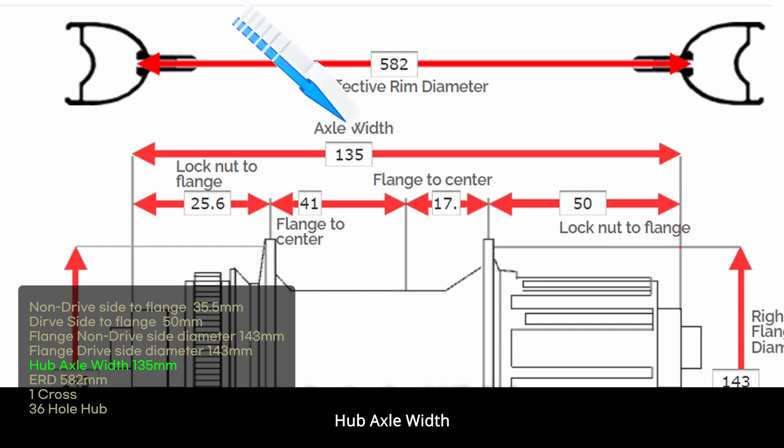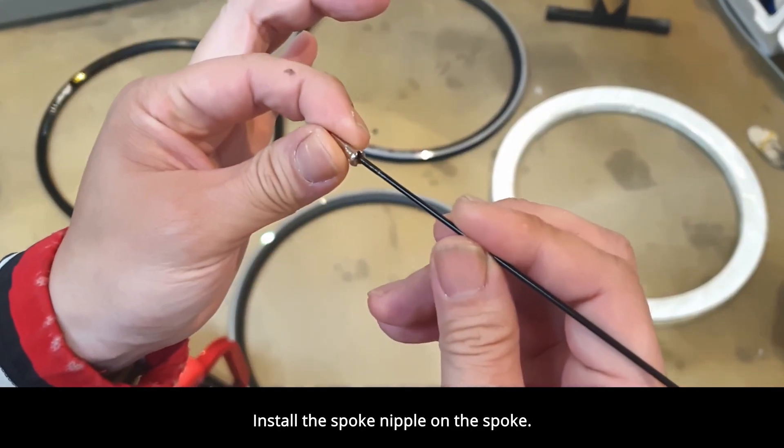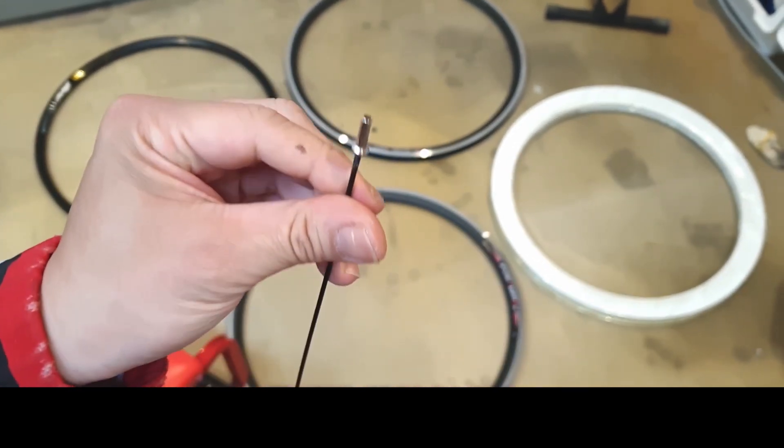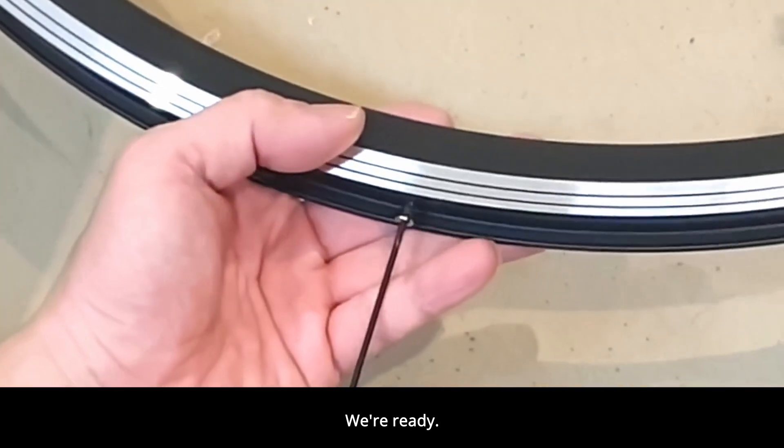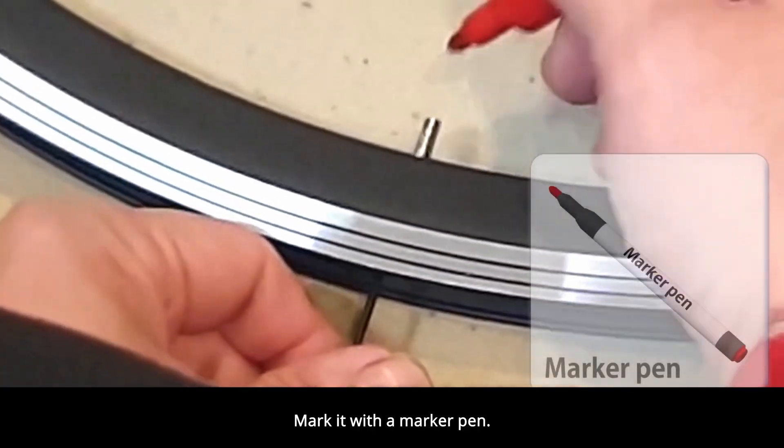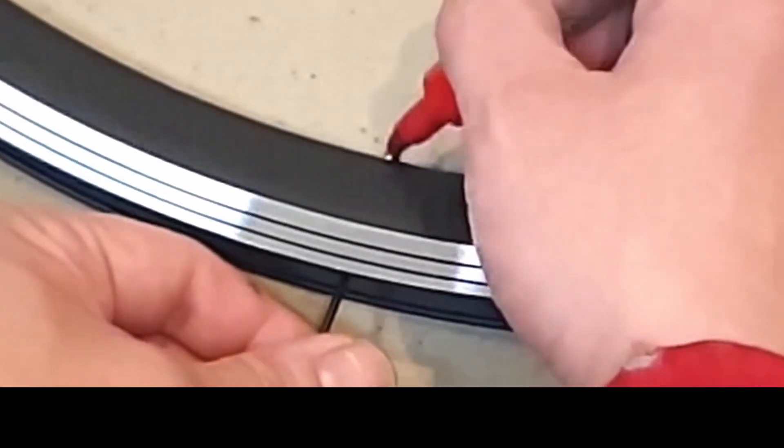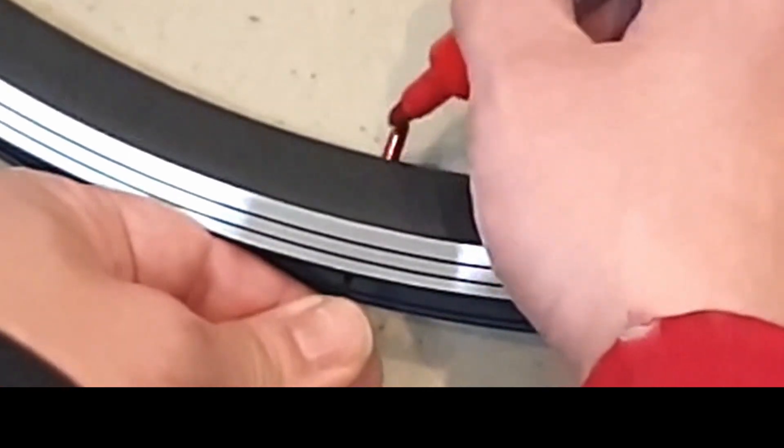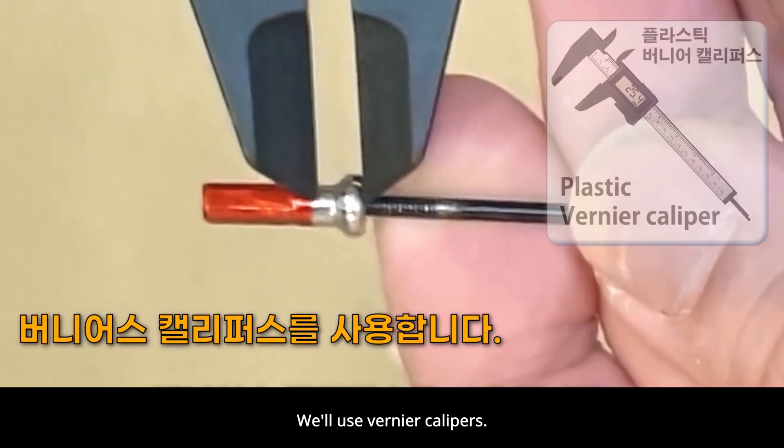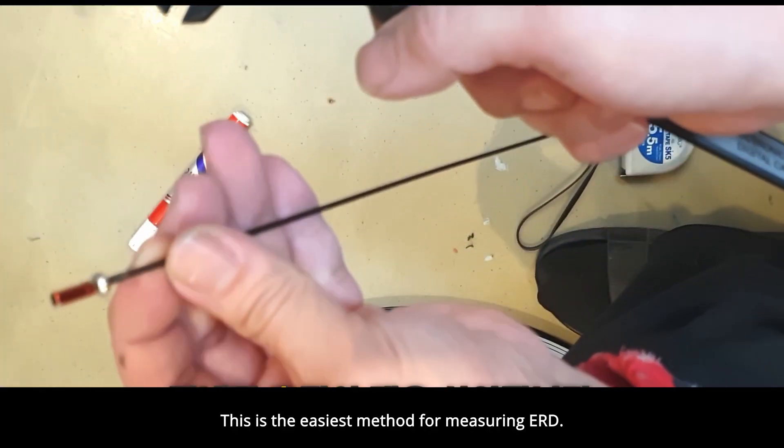Hub axle width. Effective rim diameter measurement method. Install the spoke nipple on the spoke. We're ready. Put it on the rim for a moment. Mark it with a marker pen. Take it off now. We'll use vernier calipers. We have measured 3.5 millimeters.